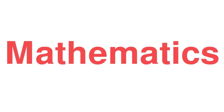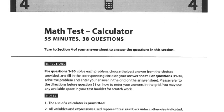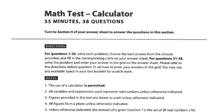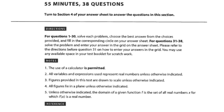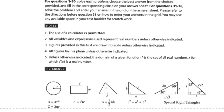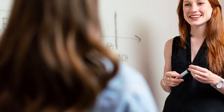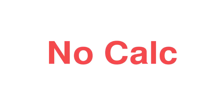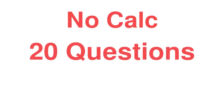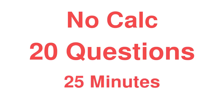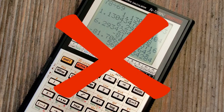The math portion of the test also contains two sections: no calculator and calculator section. It assesses the mathematical concepts and skills generally taught in high school. In the no calculator section, there are 20 questions that should be solved in 25 minutes, and the use of a calculator is not allowed.